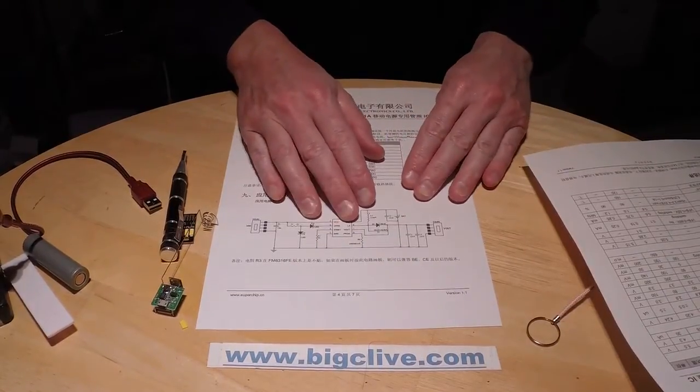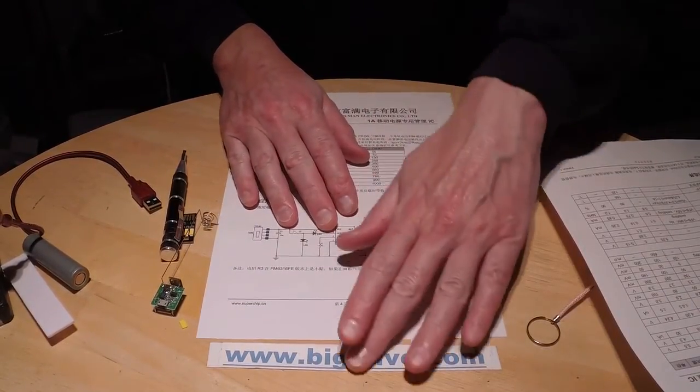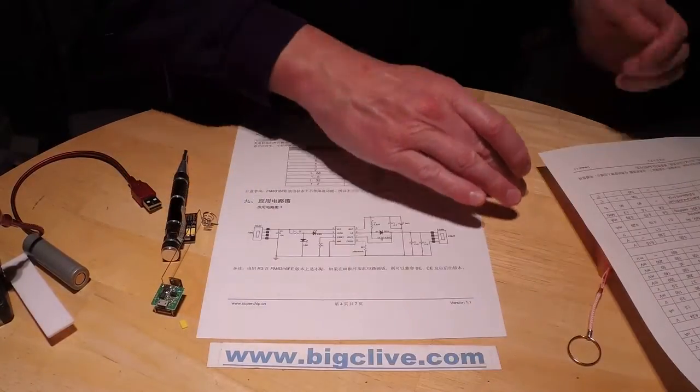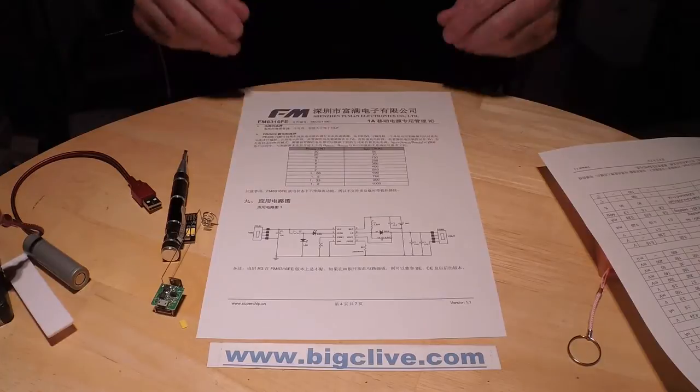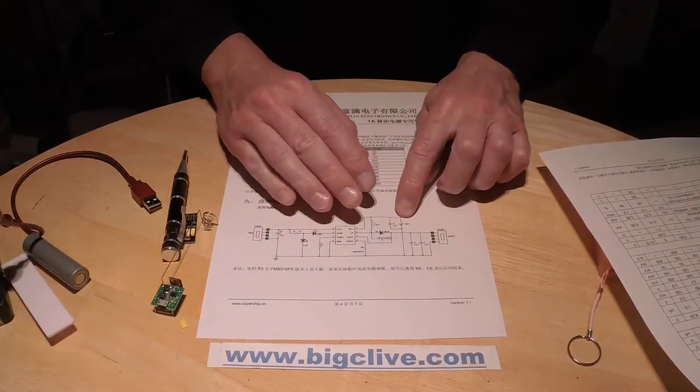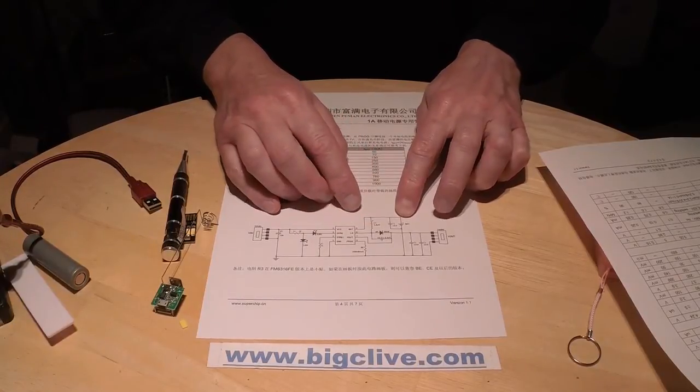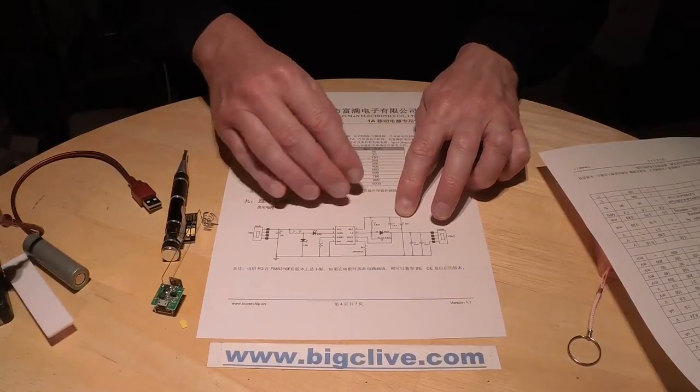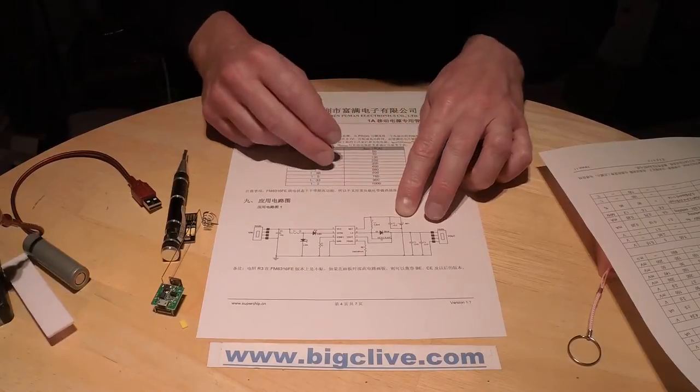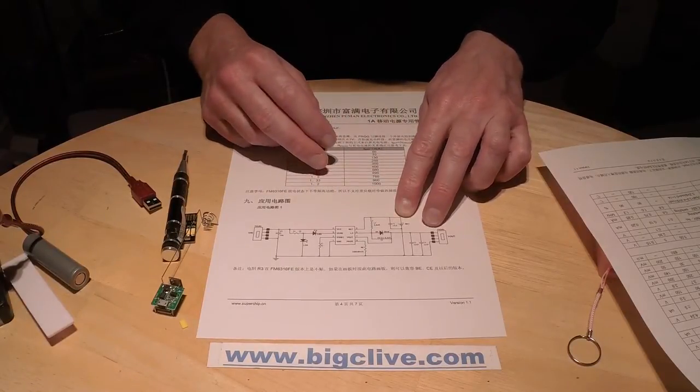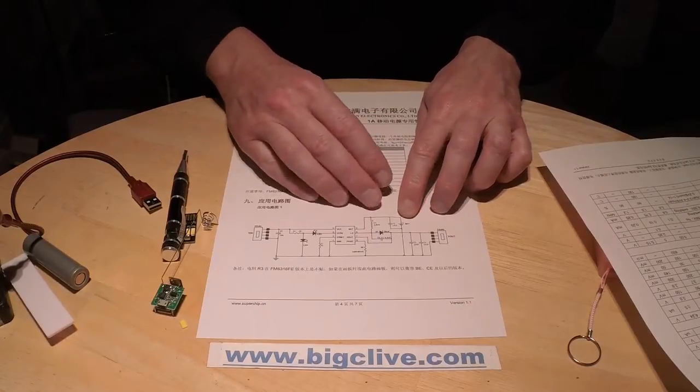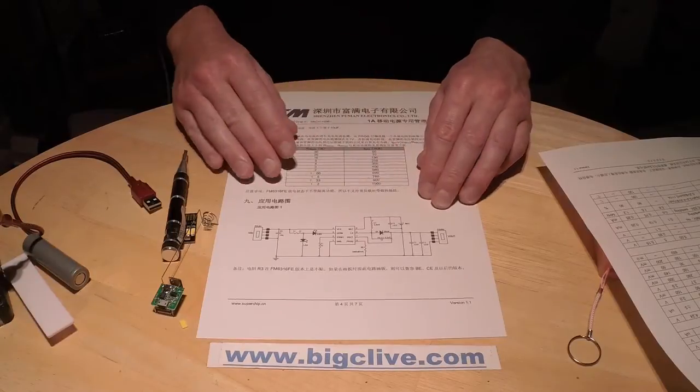And it basically does everything. It monitors the charging of the - oh, there's that Chinese black hair, I'll just move it out of the way - it monitors the charging of the battery and stops it being overcharged. And it also controls the switching through this 3.3 microhenry inductor.